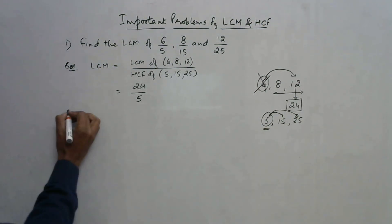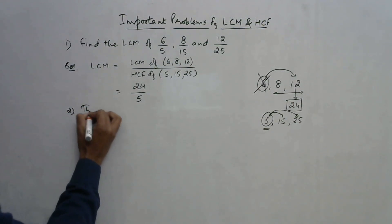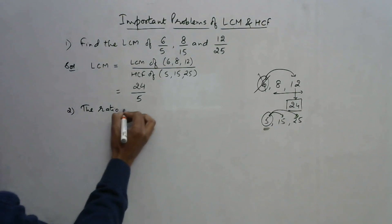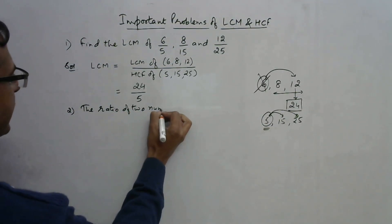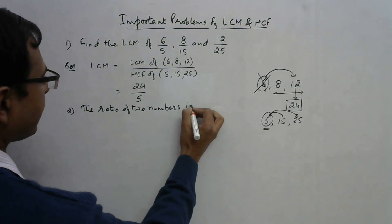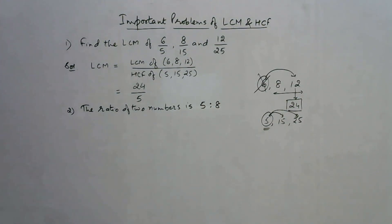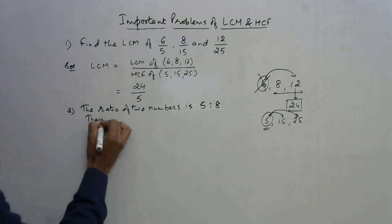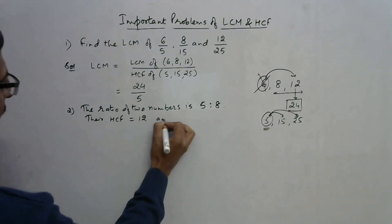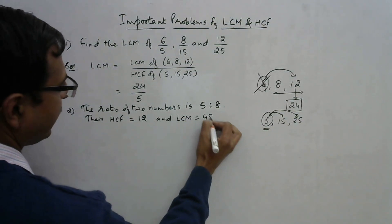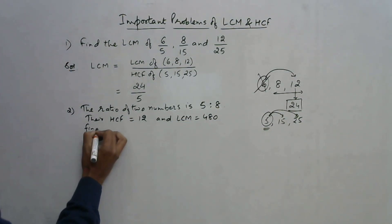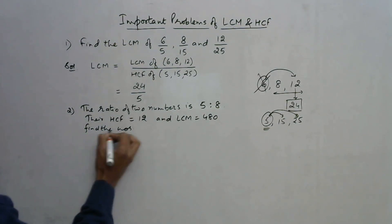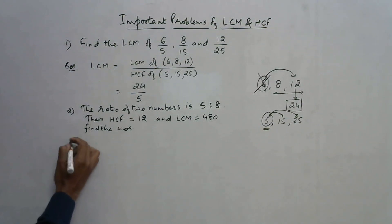The second problem goes like this: There are two numbers, the ratio of two numbers is 5 ratio 8, and obviously this is in the lowest form. Their HCF is given as 12 and LCM is given as 480. So you need to find the numbers.